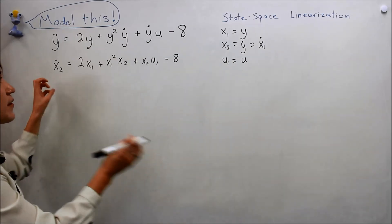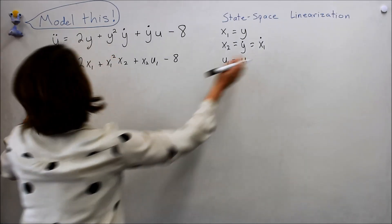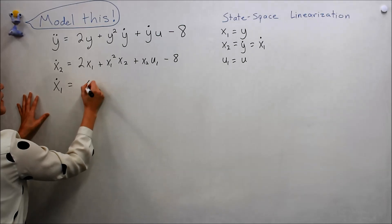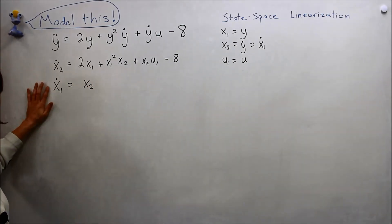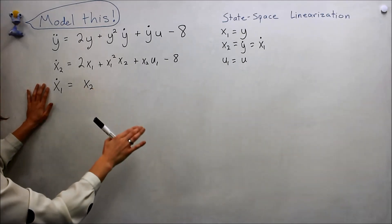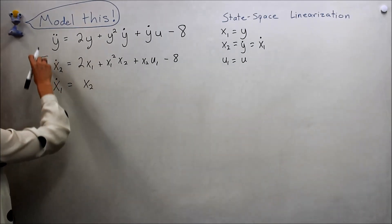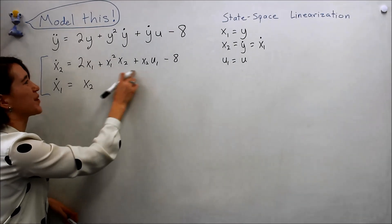If we want to rewrite this in our state space, we know x1 dot equals x2, and we know the dynamics for both of these states x1 and x2 in terms of x1, x2, and u1. So actually we've modeled it in the state space here, but we still have these nonlinear terms.